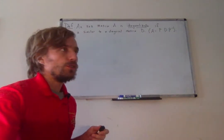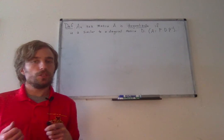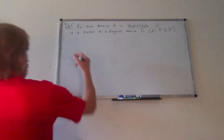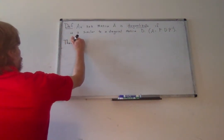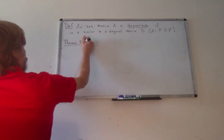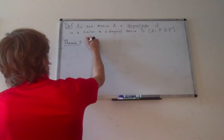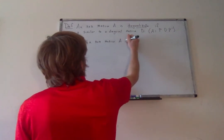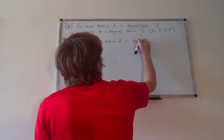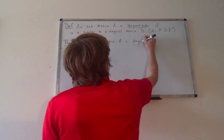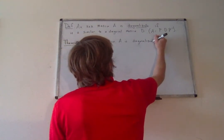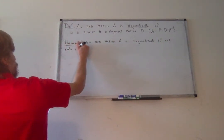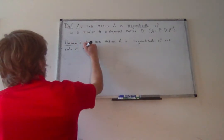It turns out we know exactly when a matrix is diagonalizable, as stated in Theorem 5. An n by n matrix A is diagonalizable if and only if A has n linearly independent eigenvectors.